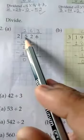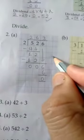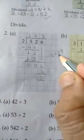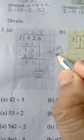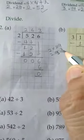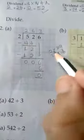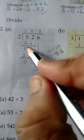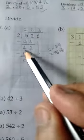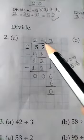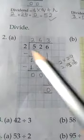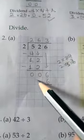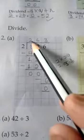Next: 526 divided by 2. First, 5 divided by 2. 2 times 2 is 4, and 2 times 3 is 6. 6 is greater than 5, so write 2 in the quotient and 4 here. 5 minus 4 is equal to 1. Bring down 2, so it will be 12. 12 divided by 2: 2 times 6 is 12. Write 6 in the quotient and 12 here. 12 minus 12 is equal to 0. Bring down 6. 6 divided by 2: 2 times 3 is 6. Write 3 in the quotient and 6 here. 6 minus 6 is equal to 0. So the quotient is 263.